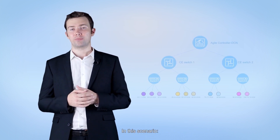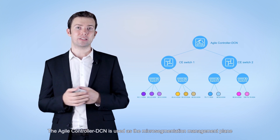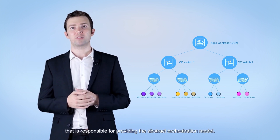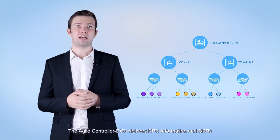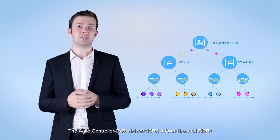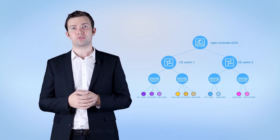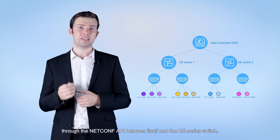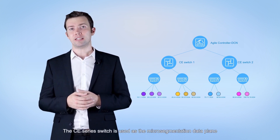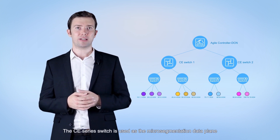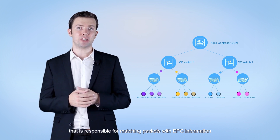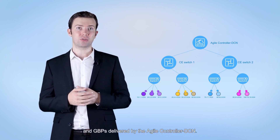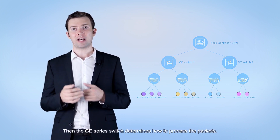The automatic orchestration of the agile controller DCN is used in the network visualization scenario of the cloud fabric DCN solution. Here, the agile controller DCN serves as the micro-segmentation management plane, providing the abstract orchestration model. It delivers EPG information and GBPs configured on the GUI to CE series switches through the NetConf API. The CE series switch acts as the data plane, matching packets with the EPG information and GBPs delivered by the agile controller DCN to determine packet processing.